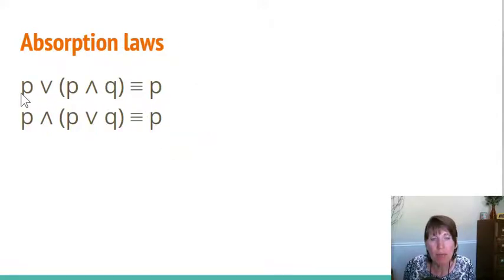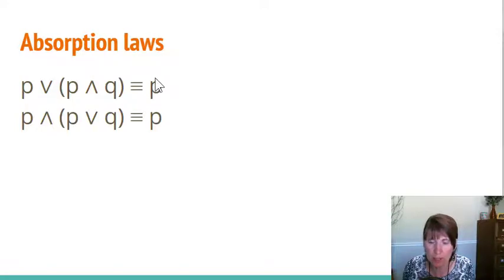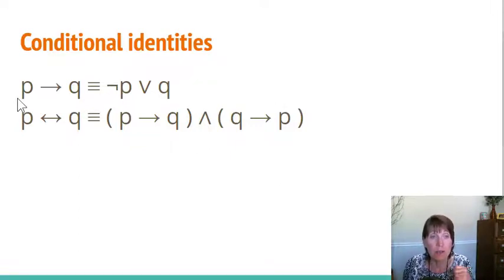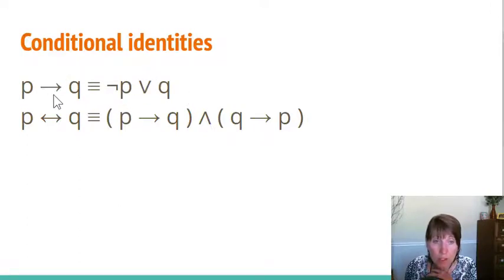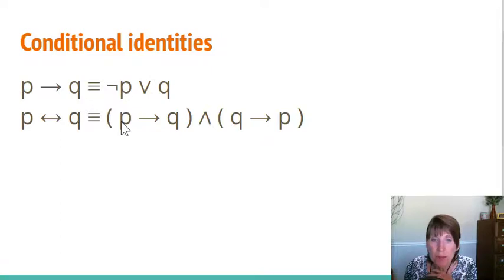The absorption laws: if you have P OR (P AND Q), you end up with just P — a significant simplification. And if you have P AND (P OR Q), you also end up with P. For conditional identities: P implies Q is logically equivalent to NOT P OR Q, so you can choose to write it using the conditional operator or using NOT and OR. The biconditional P if and only if Q is more complex — it means P implies Q AND Q implies P. Those are the laws of propositional logic.